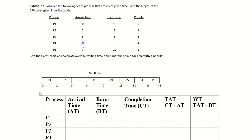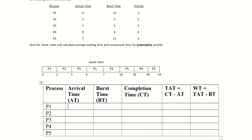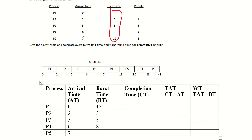We will set up a table with processes P1 to P5. The arrival times are 0, 2, 5, 6, 7, and 10. The burst times are 15, 3, 5, 8, and 12.